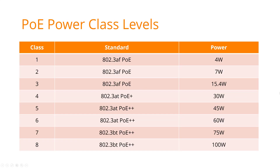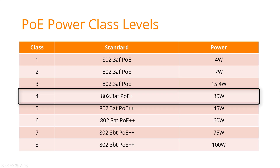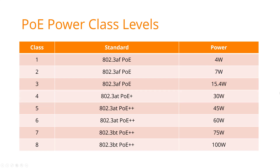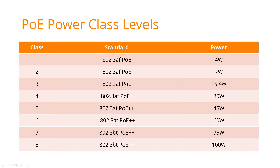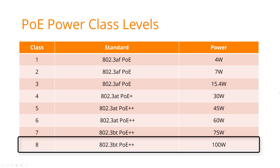Here's a more detailed look at the power class levels. Different devices draw different amounts of power, and the power is negotiated based on class levels set out under the PoE standard. For example, PoE++ class 4 supports from 4 watts, 7 watts, and 15.4 watts, all the way up to 30 watts per port. PoE++ class 6 supports those levels with a maximum of 60 watts per port, and PoE++ class 8 supports from 4 watts all the way to 100 watts per port.